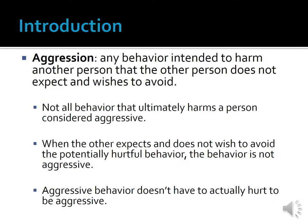The surgeon whose patient dies on the operating table was, according to this definition, not acting aggressively. Also, according to this definition, when the other person expects and does not wish to avoid the potentially hurtful behavior, the behavior is not aggressive. Thus, a boxing match is not an example of aggressive behavior since both boxers are fully aware that the other person is going to behave in ways that can potentially hurt them. Also, according to this definition, a behavior could be considered aggressive even if it doesn't necessarily hurt anyone — what is important is the intent to hurt. For example, if a person threw a beer bottle at someone's head but missed and thus didn't hurt the other person, this would still be considered aggressive behavior.